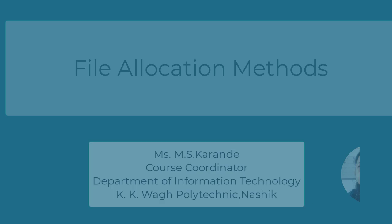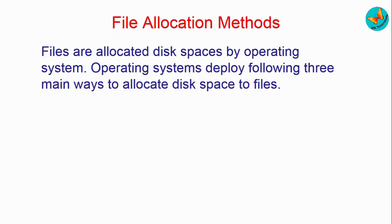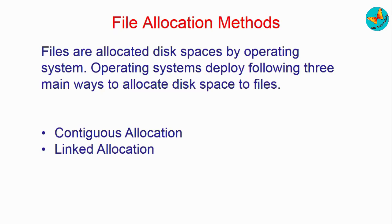Today we will start with file allocation methods. The operating system allocates disk space for our files in three different ways. We will see the advantages of each method and what we can use to deploy files. The three methods are: first, contiguous allocation; second, linked allocation; and third, indexed allocation. We will understand all three methods and see which is the best method to allocate disk space.